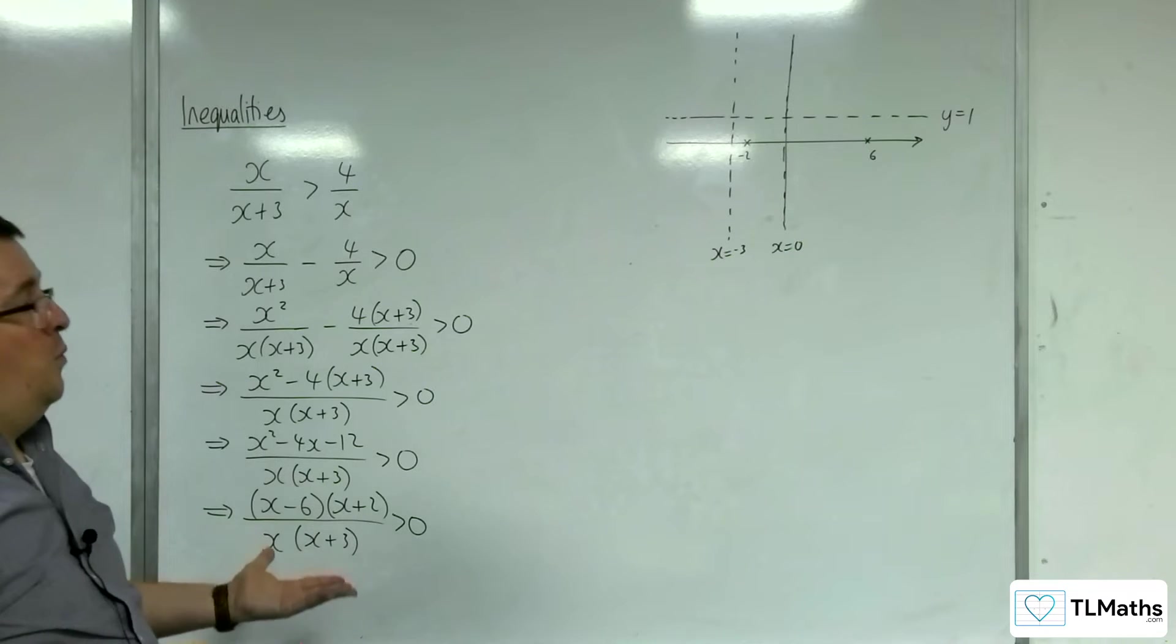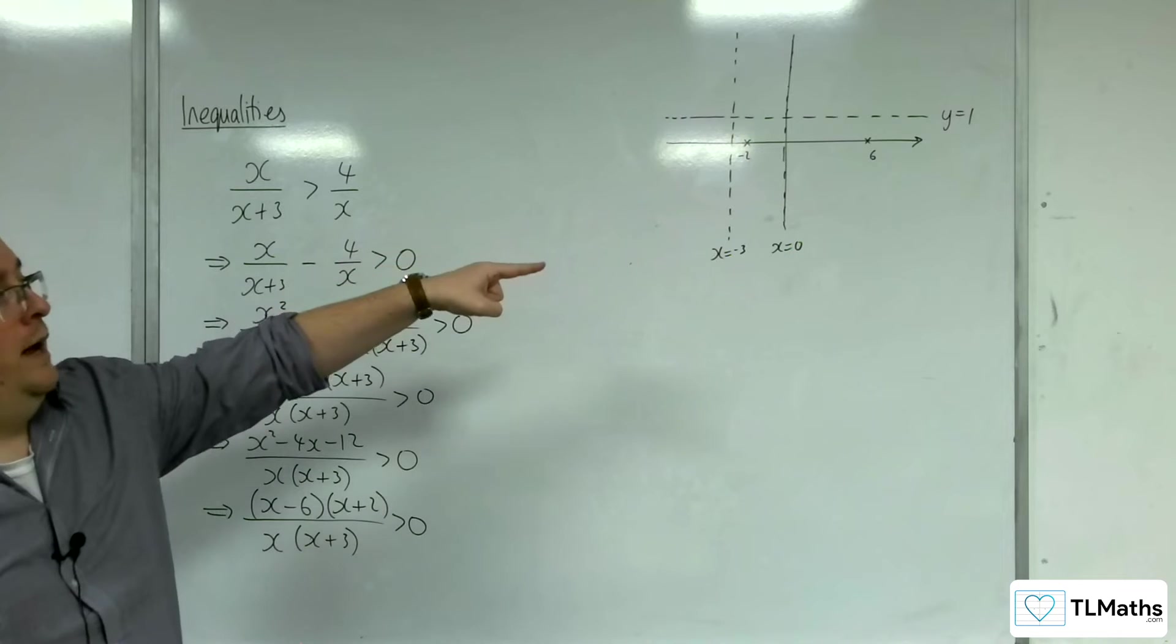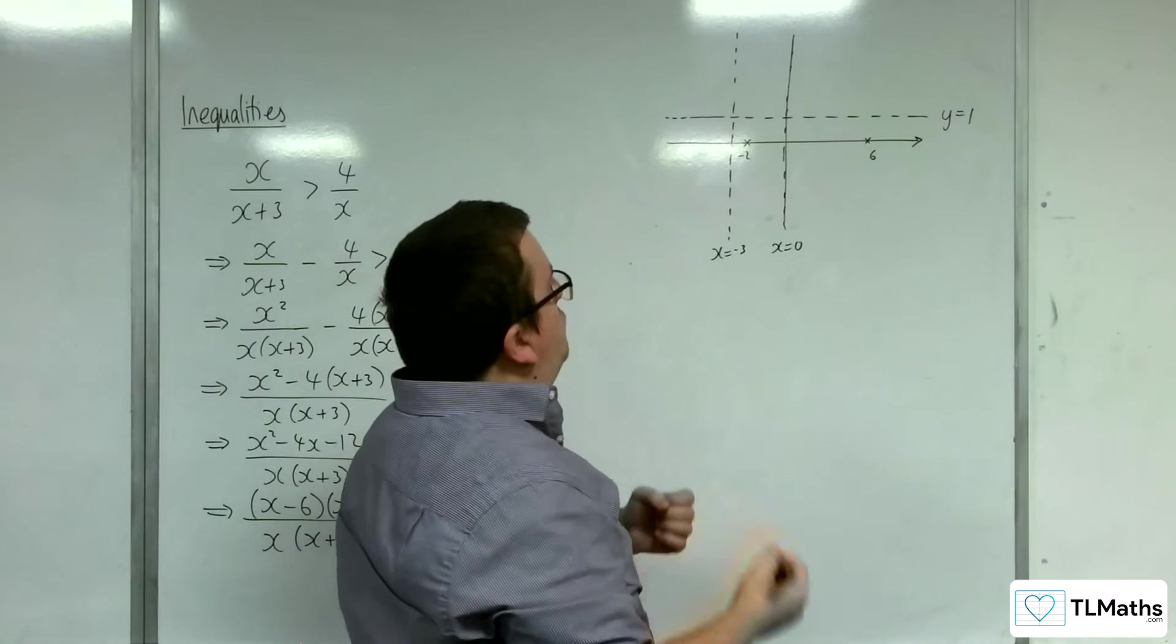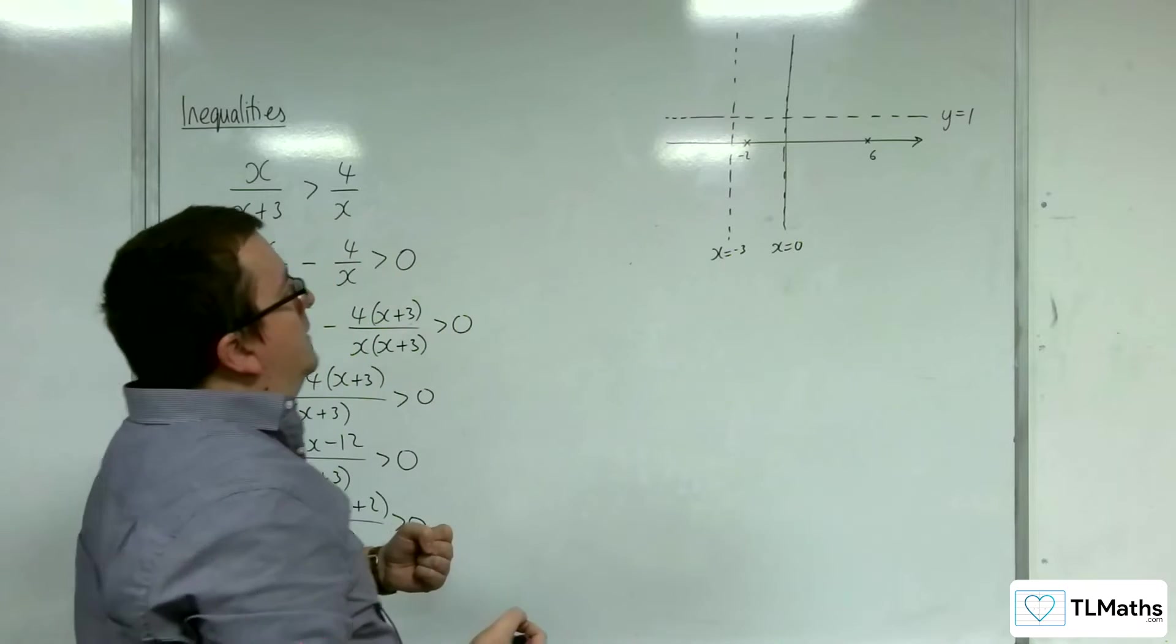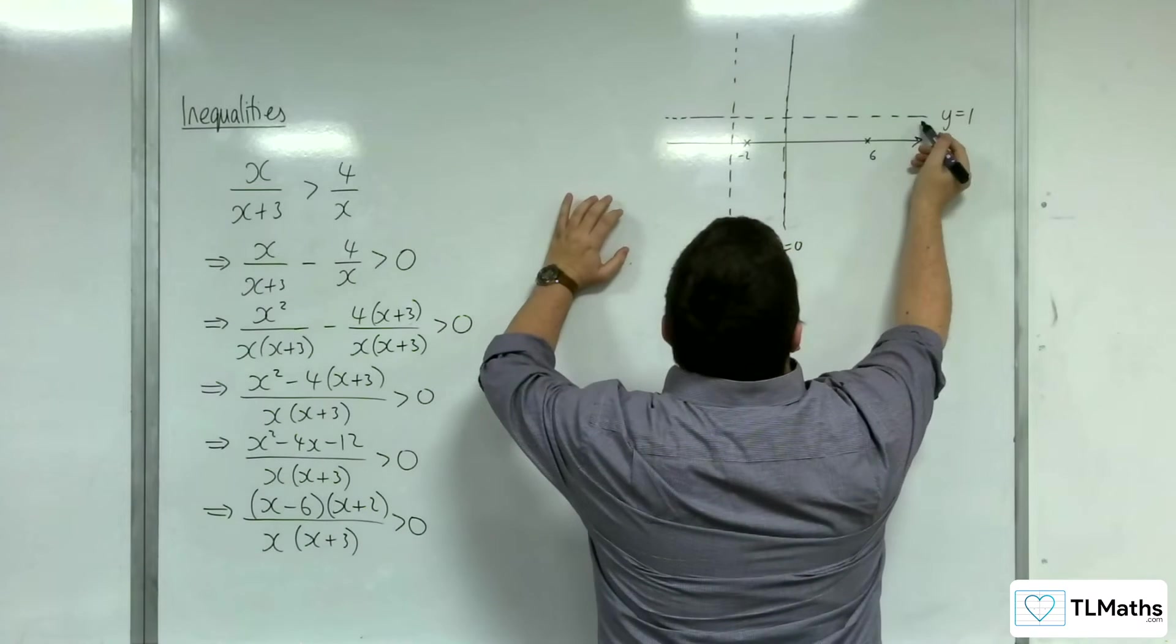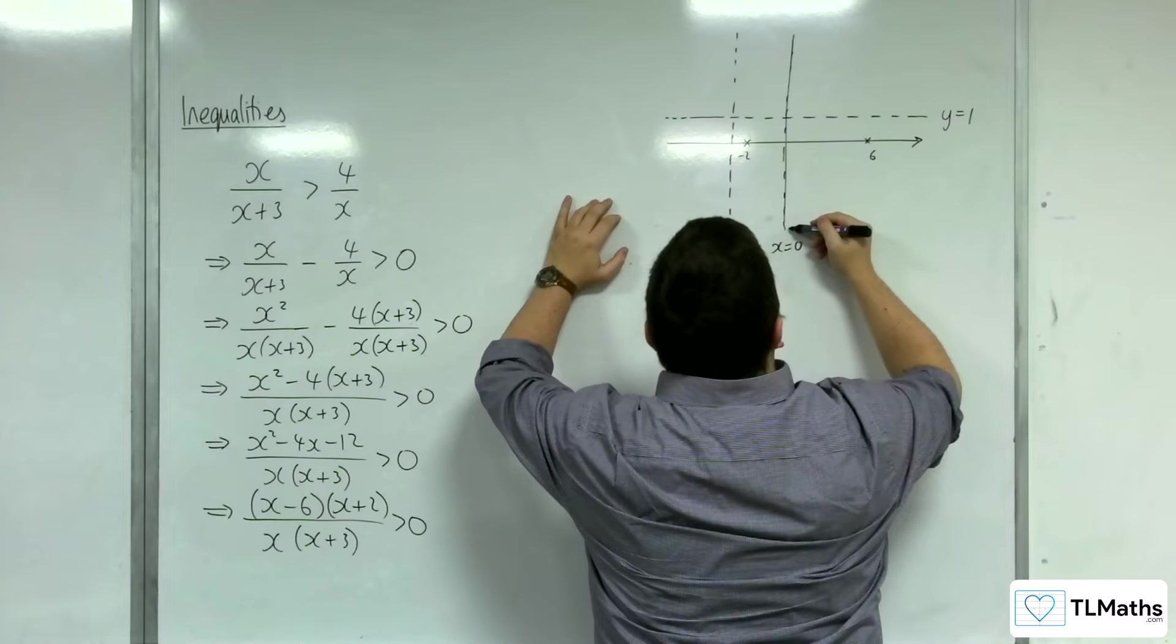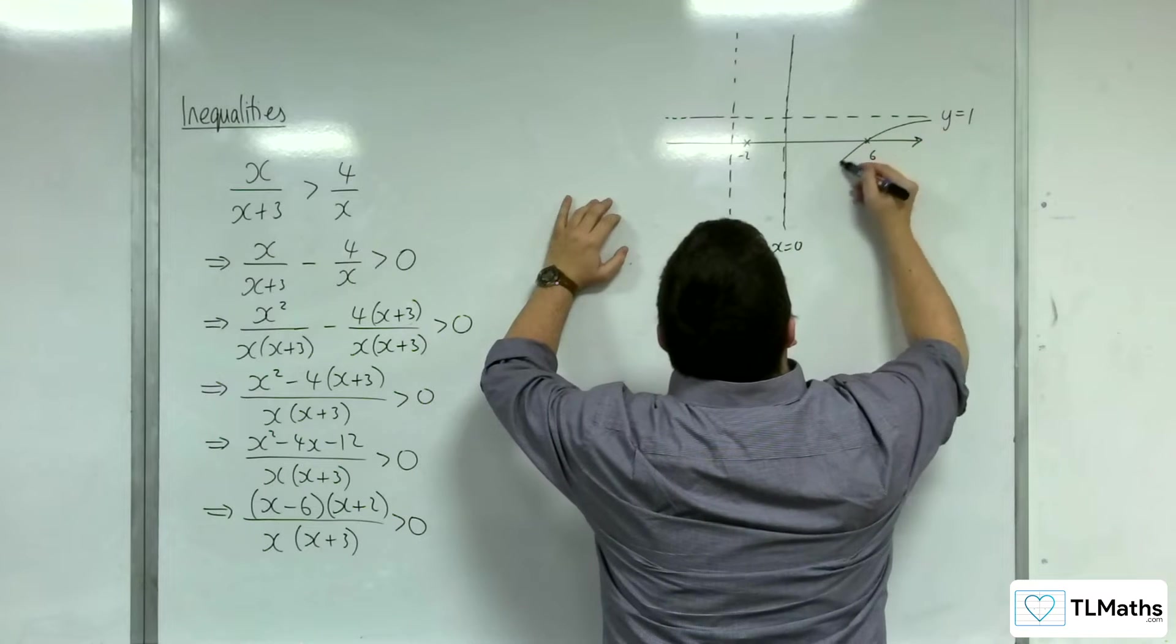It's not crossing the y axis. So I can't find that out because you've got a vertical asymptote x equals 0. So the last thing really is to determine what's happening here. So it's got to tend towards y equals 1 and go through 6 and tends towards the x equals 0. So it's got to look like something like that.